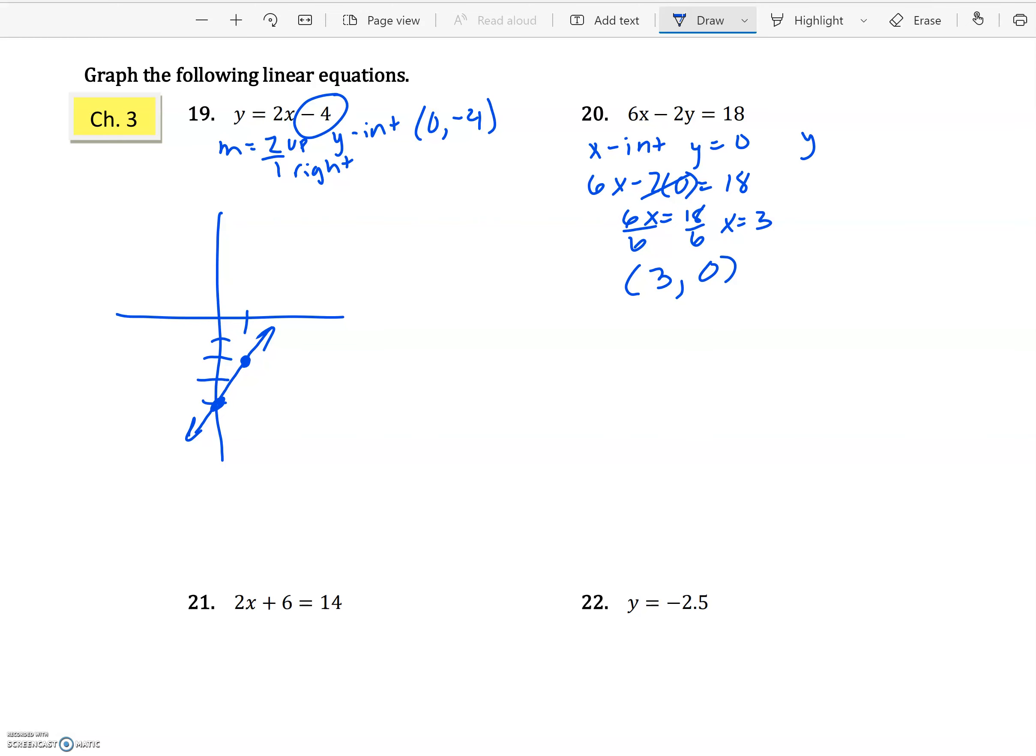Let's go ahead and find the y-intercept. It means x equals 0. So 6 times 0 minus 2y equals 18. Again, that 0 makes the first part go away. So I'm going to do -2y equals 18, divide by -2. Y equals -9. So that means my y-intercept is the point on the y-axis, (0, -9). We've got our two points, so we can go ahead and graph.